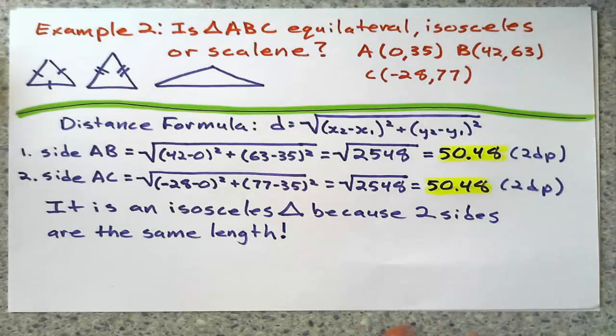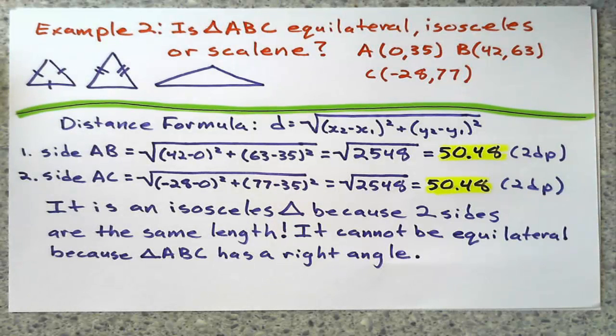And back to my previous problem, I will say, well, it can't be equilateral because it has a right angle in there. It cannot be equilateral because ABC has a right angle.